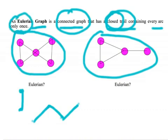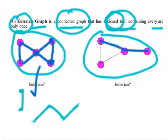Looking at the first graph, starting at a node and going arc to arc, I can use each arc only once and return to where I started — a closed trail — so that graph is Eulerian. On the second graph, going arc to arc, I run into a problem: to get back to the start I'd have to reuse an arc I've already been down. Since the definition requires each arc only once, that graph is not Eulerian.